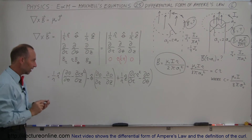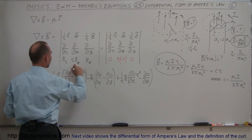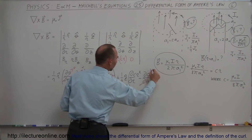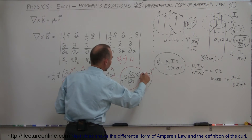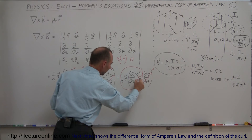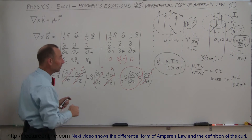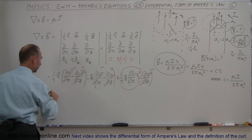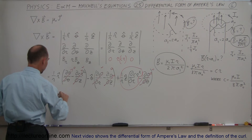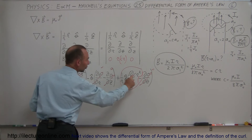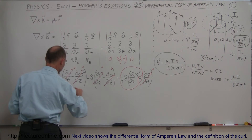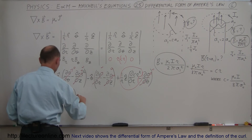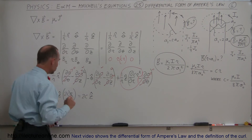When we evaluate all these terms, every term except one becomes zero — the partial of zero is zero, and the partial of a constant is zero. The only surviving term is the partial derivative with respect to R of CR squared, which gives 2C times R. So the result is 1 over R times Z-hat times 2CR. The R's cancel out, and we get 2C times Z-hat.